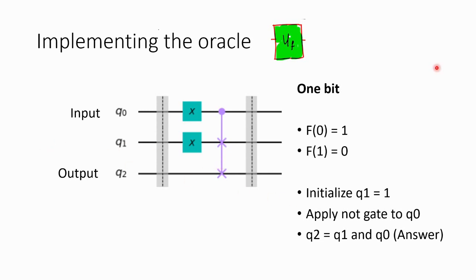Do you find any problem with this circuit? It looks pretty okay — it has one input bit q0, and according to that q0 it finds the answer in the output bit q2. Everything looks fine, correct?